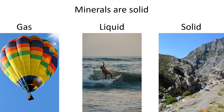All things on earth take on one or more forms: solid, liquid, or gas. Gas is matter that expands to fill a space. Air is a combination of gases — it is what makes balloons float and is what we breathe in. Gas has no shape. Liquids take on the shape of the container, but they do not expand; they have a constant volume. Solids have a defined shape with a constant volume. Minerals are solids.